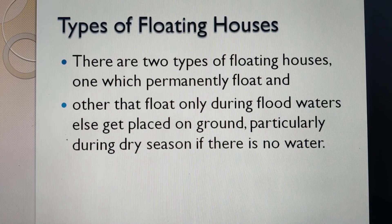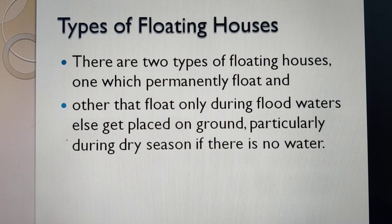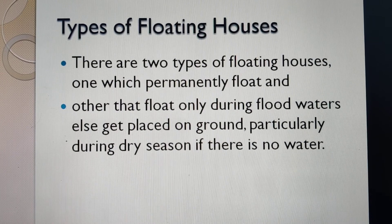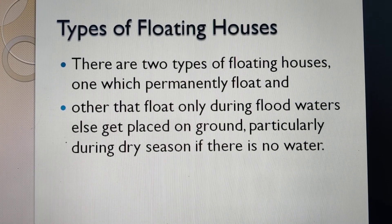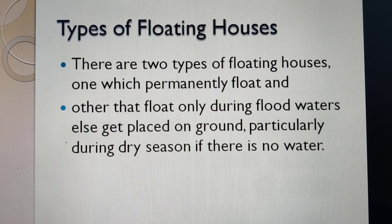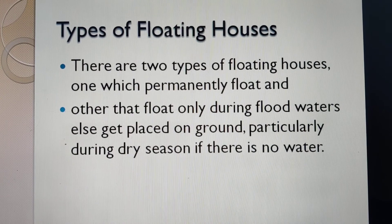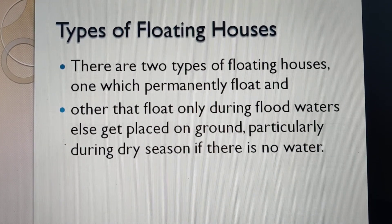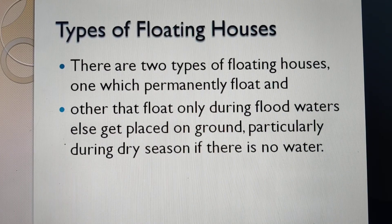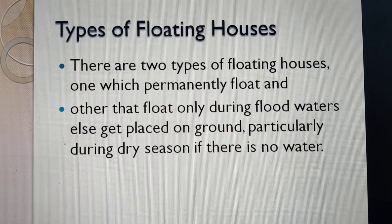There are two types of floating houses: those which permanently float on water, and those which float only during floodwaters and get placed on the ground during the dry season when there is no water. We are not talking about houseboats, where boats are used for construction and taken from place to place. We are talking about houses which remain at one fixed place.